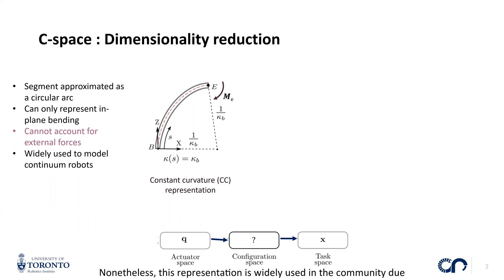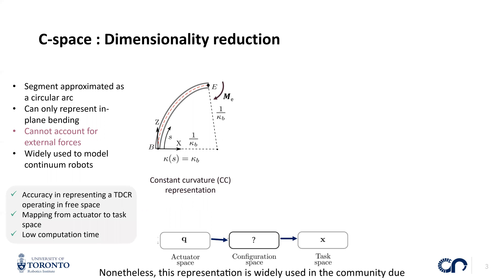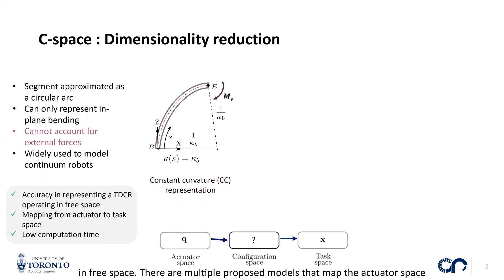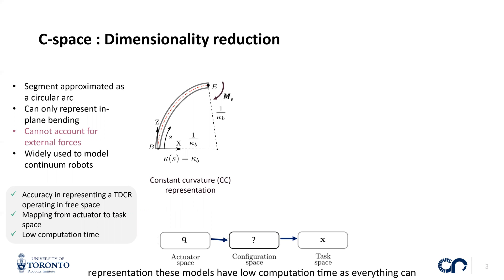Nonetheless, this representation is widely used in the community due to its simplicity and accuracy in representing these robots while operating in free space. There are multiple proposed models that map the actuator space to the task space, and due to its simplicity, these models have low computation time as everything can be expressed in the form of matrix operations.